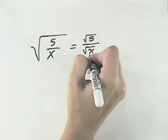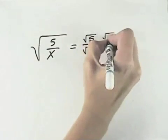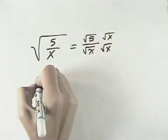In order to get rid of the square root symbol in the denominator, we can multiply the numerator and the denominator by that square root of x.